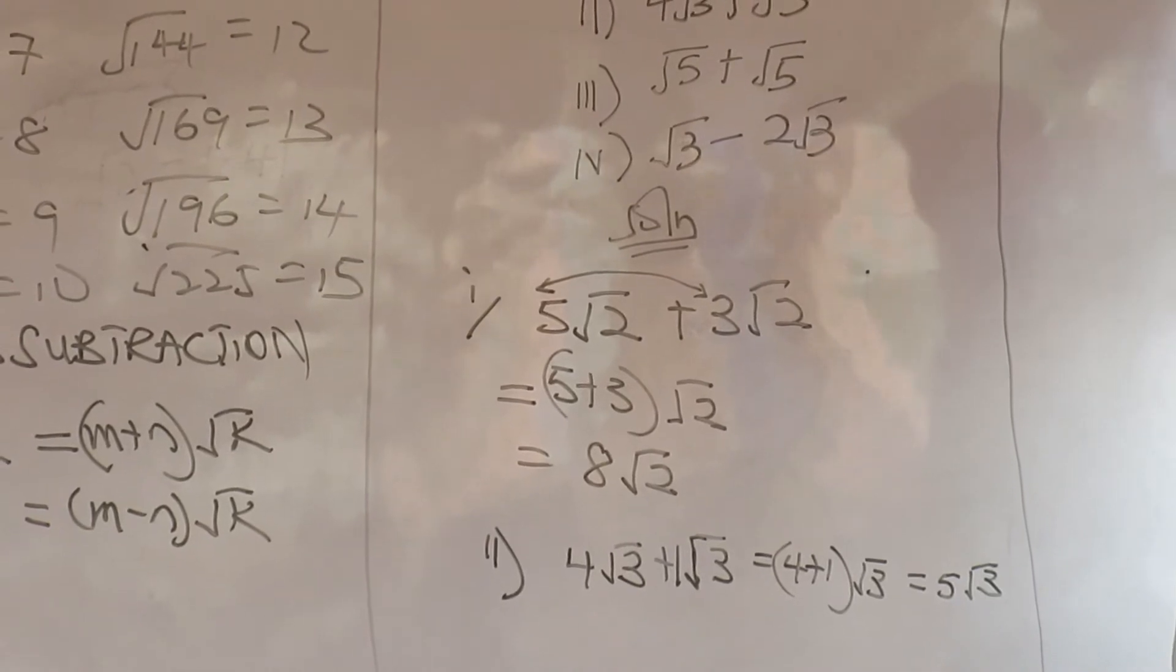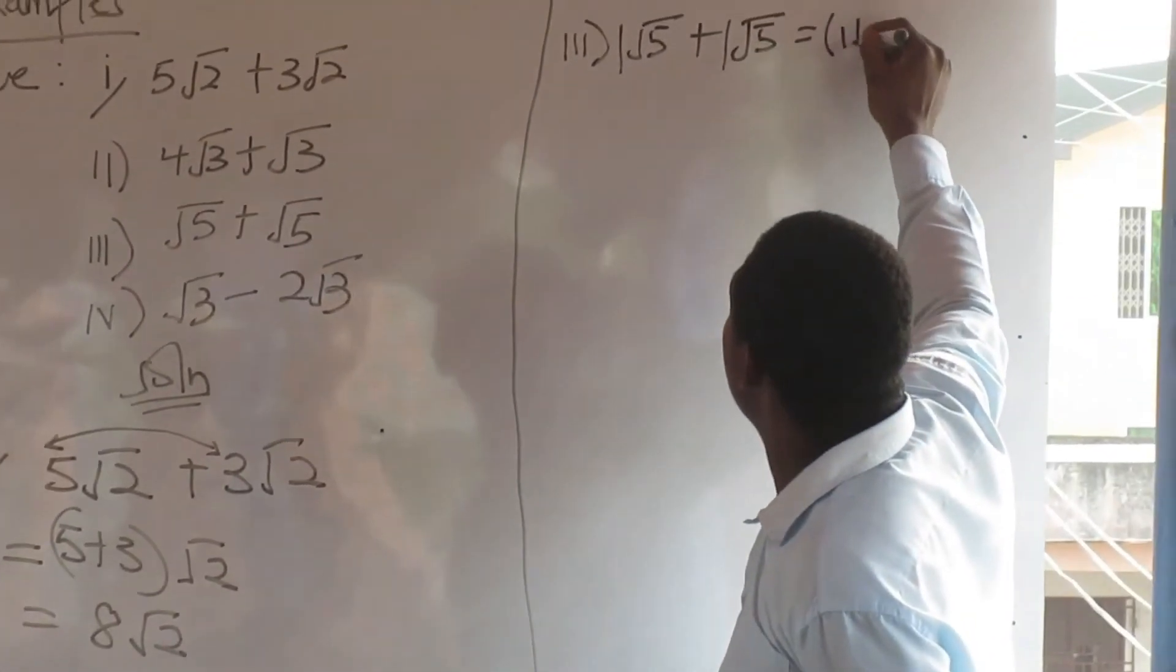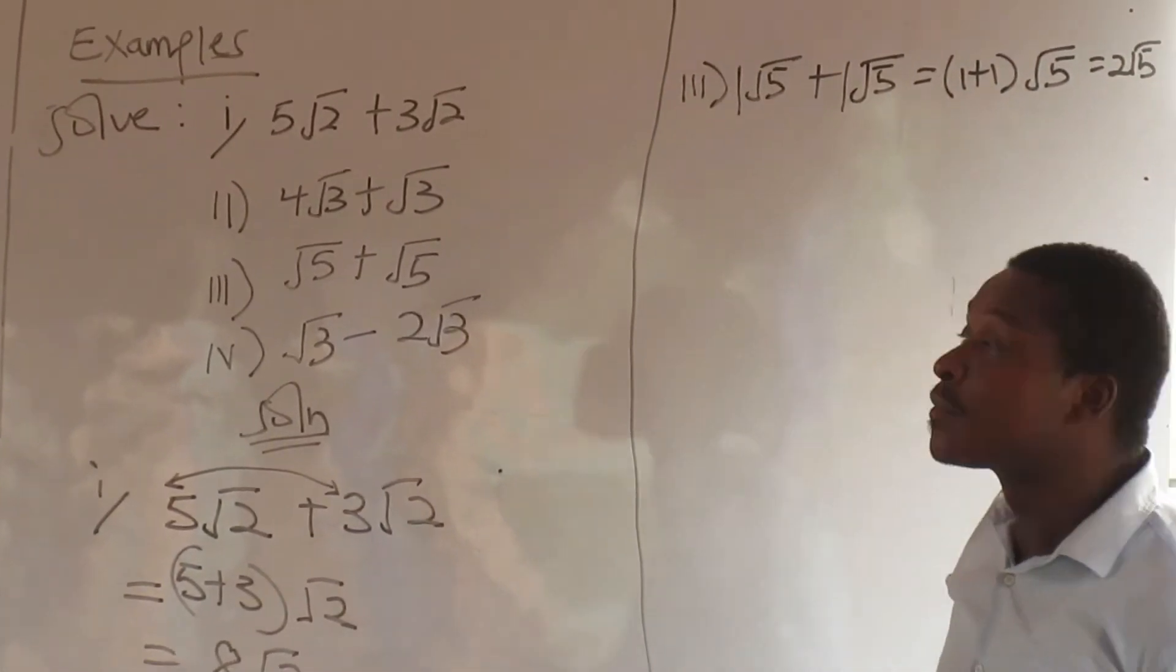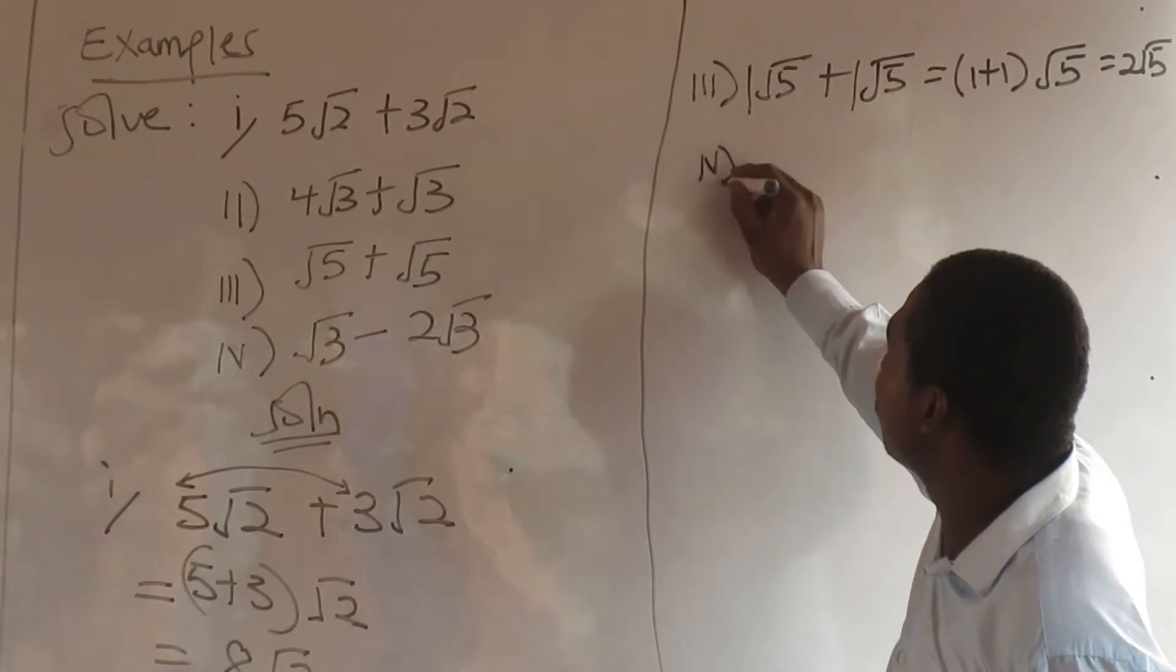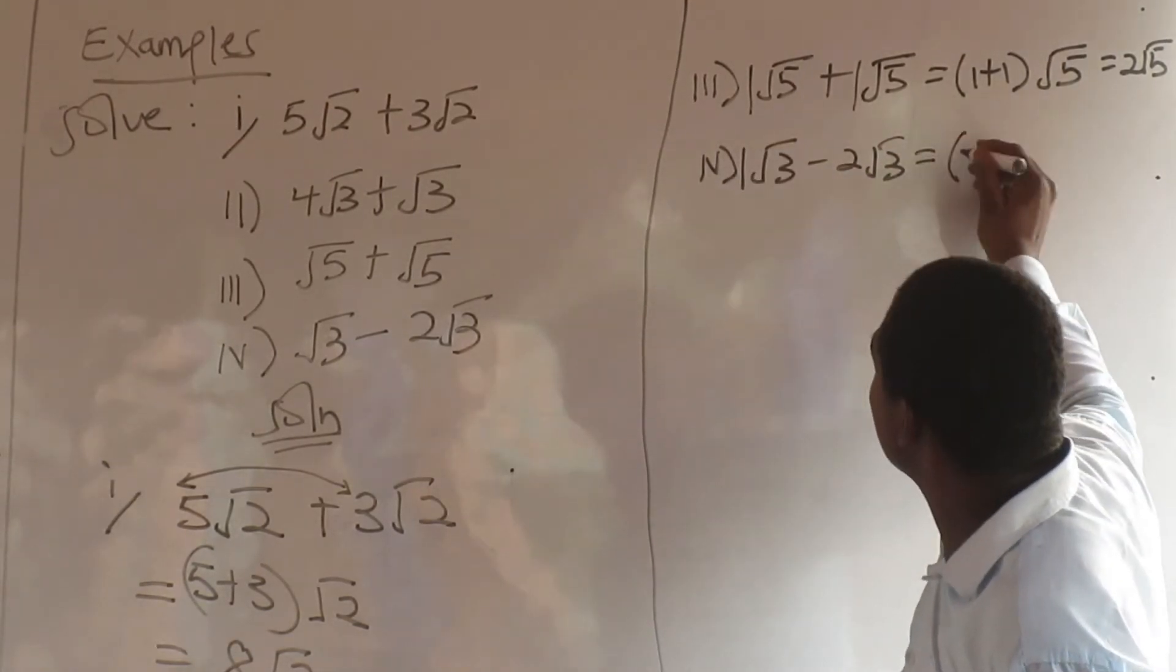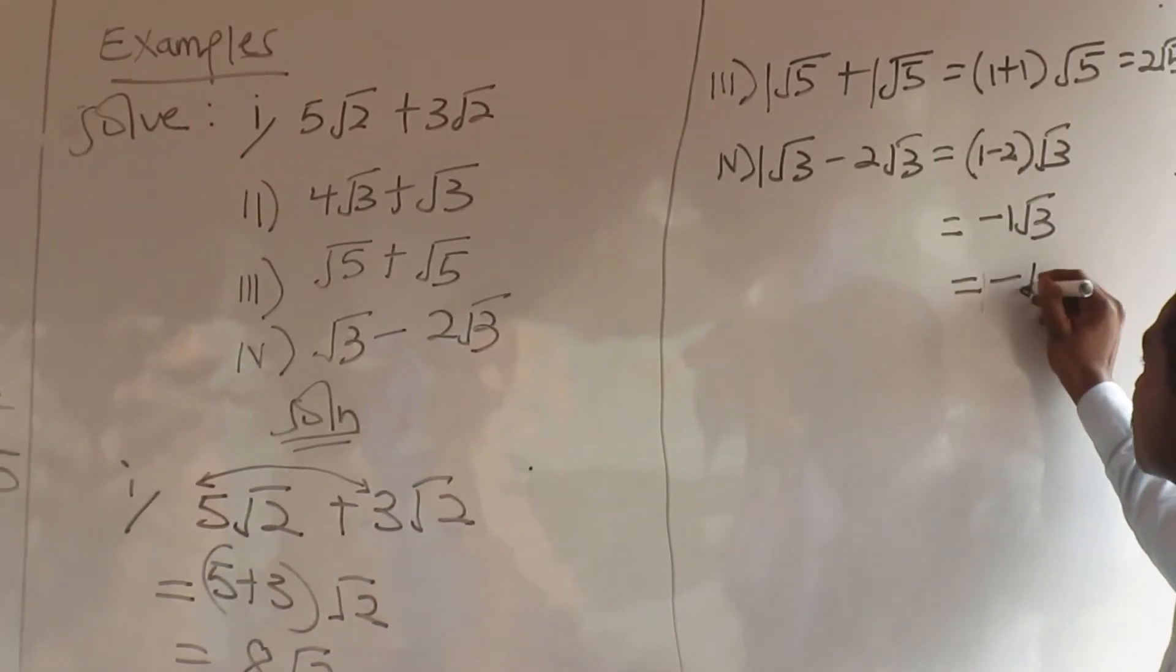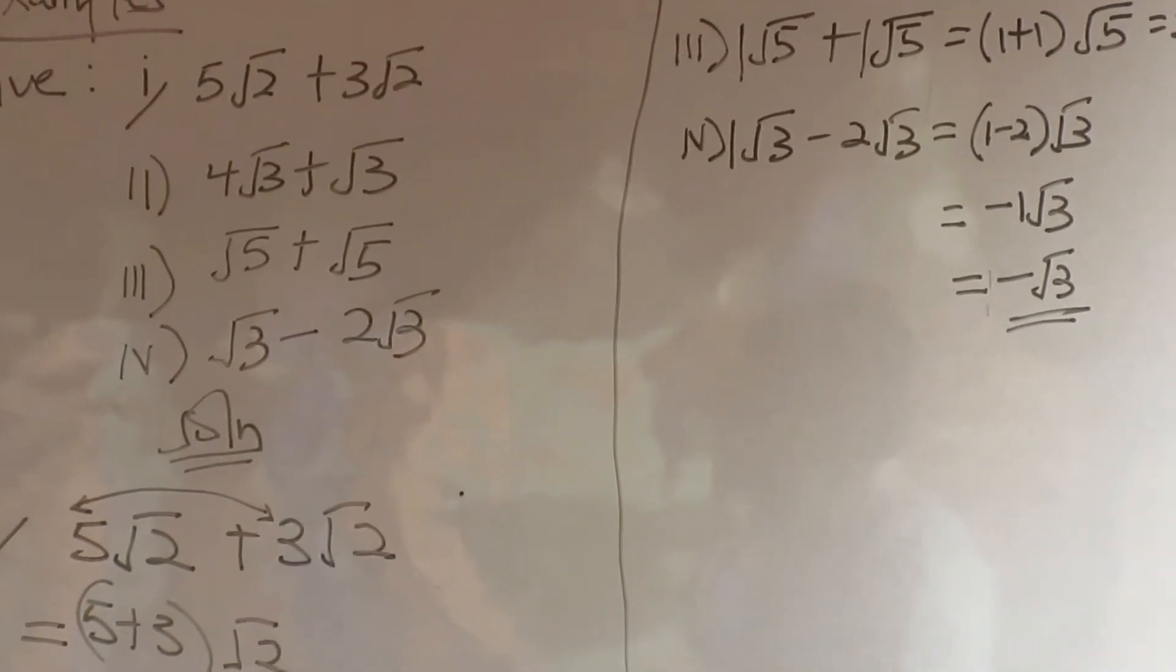Now root 5 plus root 5. So there is 1 coefficient here. This will give me 1 plus 1 or root 5. Answer: 2 root 5. Root 3 minus 2 root 3. There is a coefficient here, 1. So that is 1 minus 2 root 3. This will give me negative 1 root 3. So that is how to add and subtract surds.